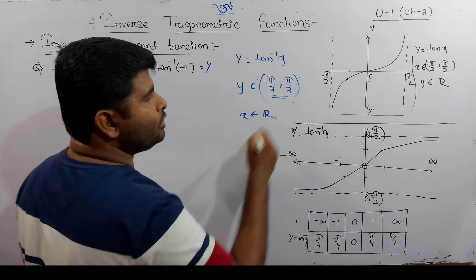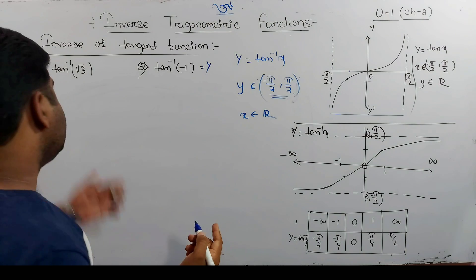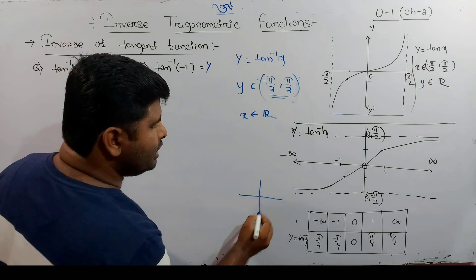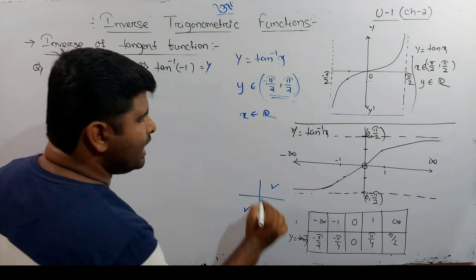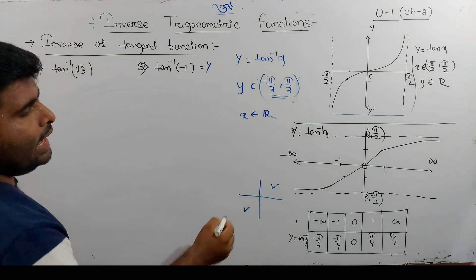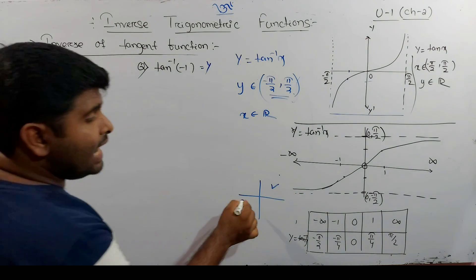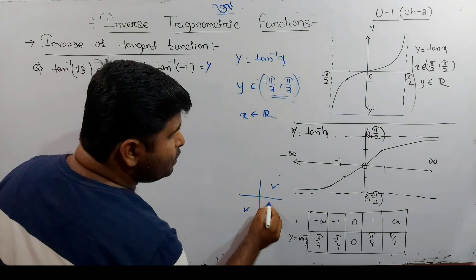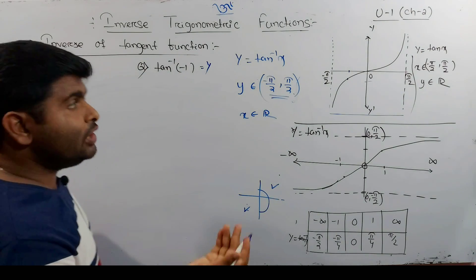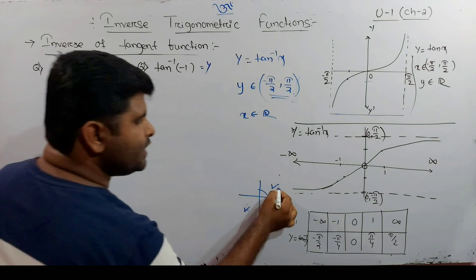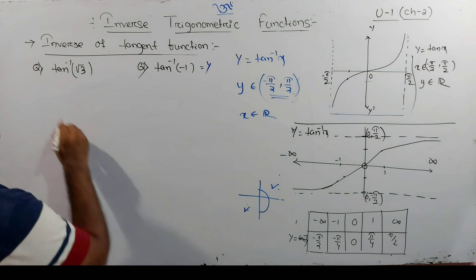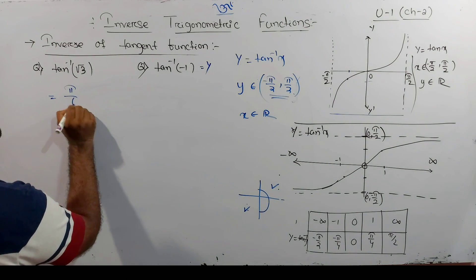So, the y value is in the interval from minus π/2 to plus π/2. Looking at root 3: root 3 is a positive value. The first quadrant is positive, and since the value is positive and lies within minus π/2 to plus π/2, the value is equal to π/3.